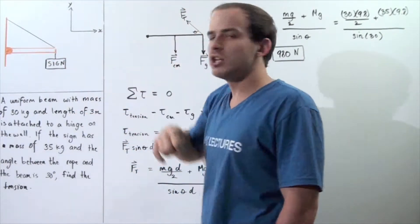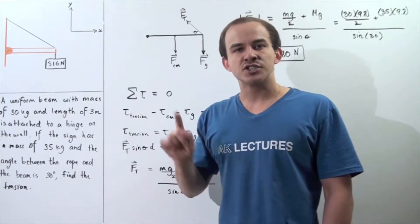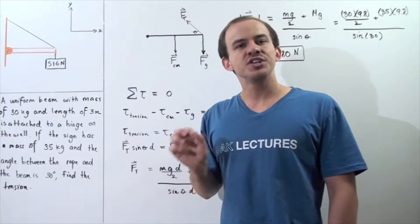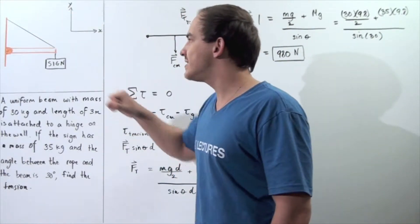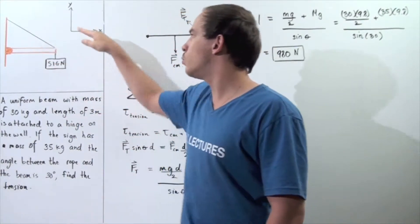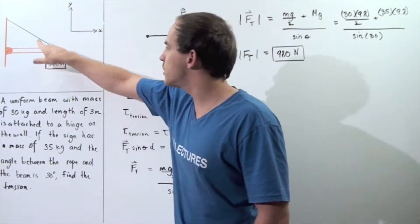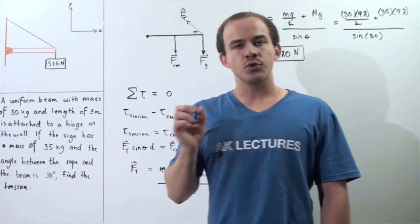We have the beam that acts along the x-axis. Let's suppose we attach the beam to the wall using a massless rope shown here, and the rope makes an angle of 30 degrees with respect to our beam, with respect to the x-axis. So this angle between the rope and the beam is 30 degrees.